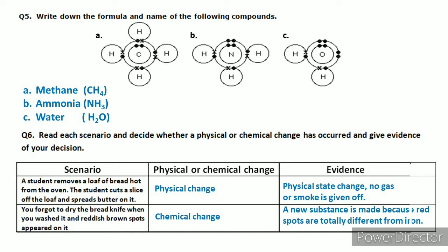Now let's go to question number six: read each scenario and decide whether a physical or chemical change has occurred, and give evidence for your decision. If you think there is a chemical change, the evidence might include: release of heat, absorption of heat, release of gas, smoke coming out. These are important indicators to distinguish physical and chemical change.